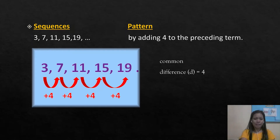Consider the sequence 3, 7, 11, 15, 19. Its pattern is formed by adding 4 to each preceding term. So the common difference is 4.